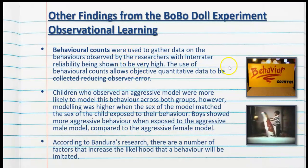Other findings from the Bobo Doll experiment in terms of science inquiry skills: behaviour counts were used to gather data on the behaviours observed by the researchers, with intra-rater reliability shown to be very high. The use of behaviour counts allows objective quantitative data to be collected, reducing observer error. Bandura and his team were able to count how many times aggressive behaviours, such as hitting and kicking, were shown by the children.